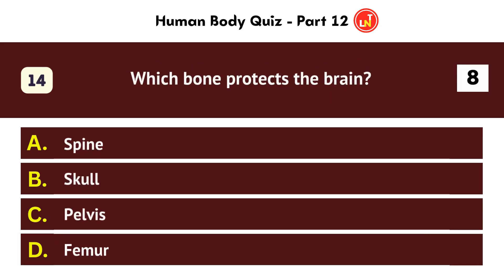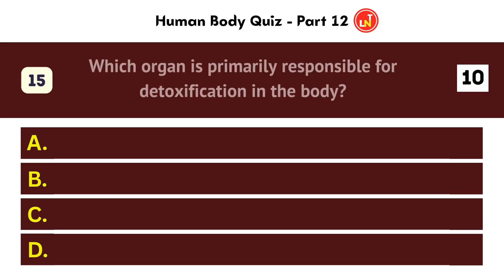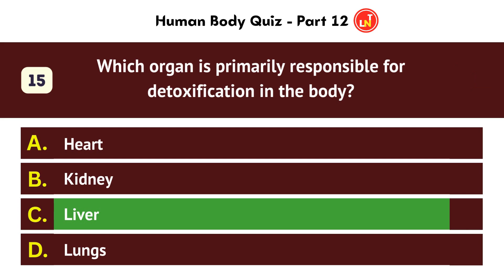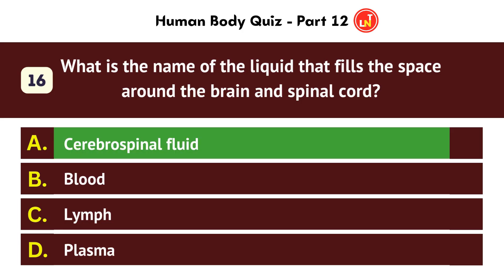Which bone protects the brain? Which organ is primarily responsible for detoxification in the body? Liver. What is the name of the liquid that fills the space around the brain and spinal cord? Cerebrospinal fluid.